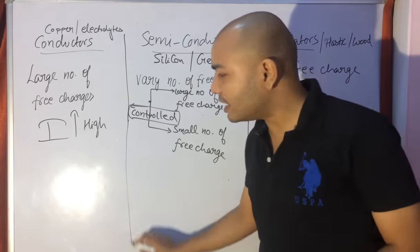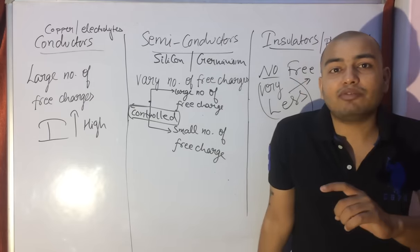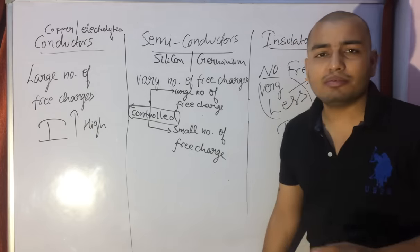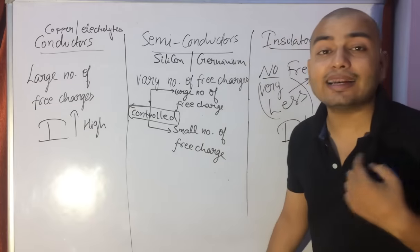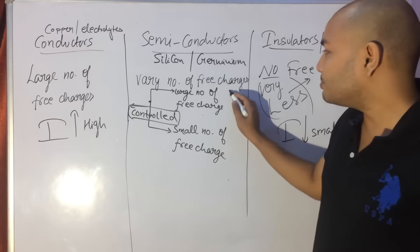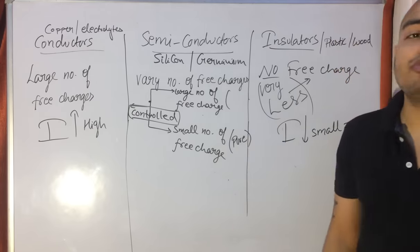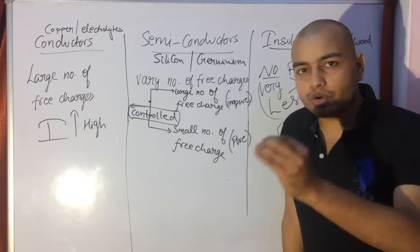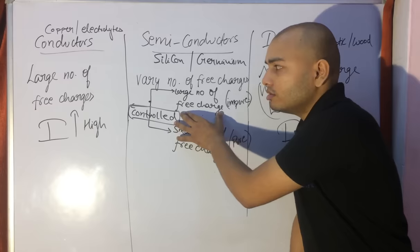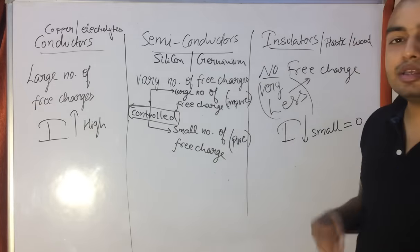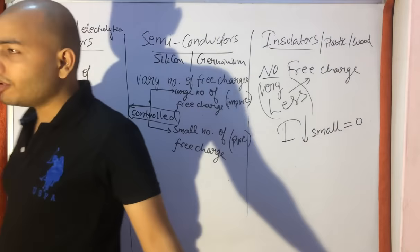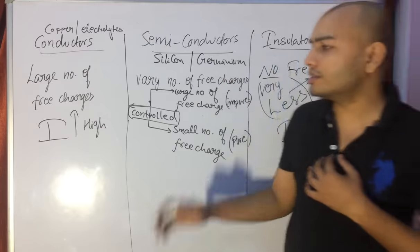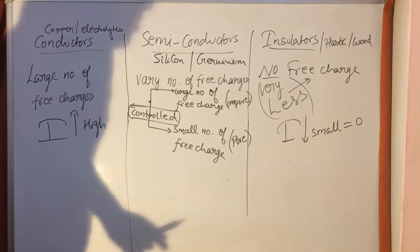The same semiconductor — silicon or germanium — can have fewer or more free charges, and we can change that. If the semiconductor is pure, it has a small number of free charges. If it is impure — if you add impurities — the number of free charges increases, current increases, and conductivity increases. You can increase the conductivity of a semiconductor by adding impurities. So semiconductors can supply high or low current depending on purity.